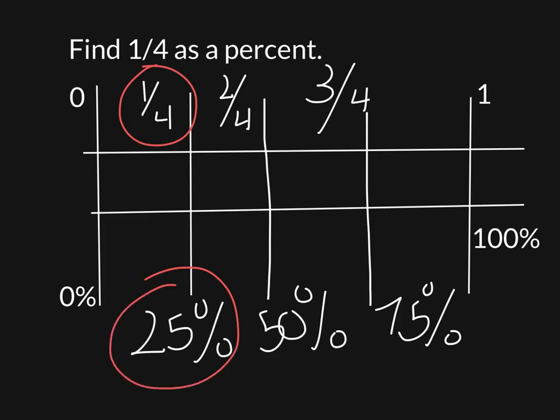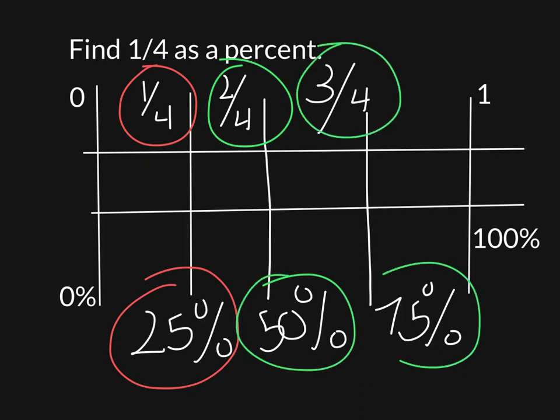By the way, I also know that two-fourths is fifty percent, and three-fourths is seventy-five percent. And it might just be a little bit helpful to think about the fact that one-fourth of a dollar is twenty-five cents, and one-fourth is the same thing as twenty-five percent.